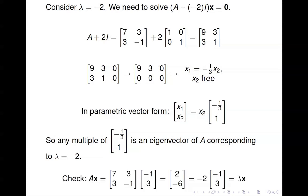You can check again: multiply A times x and you get (2, -6), which equals negative 2 times (-1, 3) — the eigenvector I picked. That might not look like the parametric form we got, but I just chose x2 to be 3 and scaled it to get rid of the fraction: 3 times (-1/3) gives -1, and 3 times 1 gives 3. Any non-zero multiple of this vector would be an eigenvector corresponding to lambda equals negative 2.